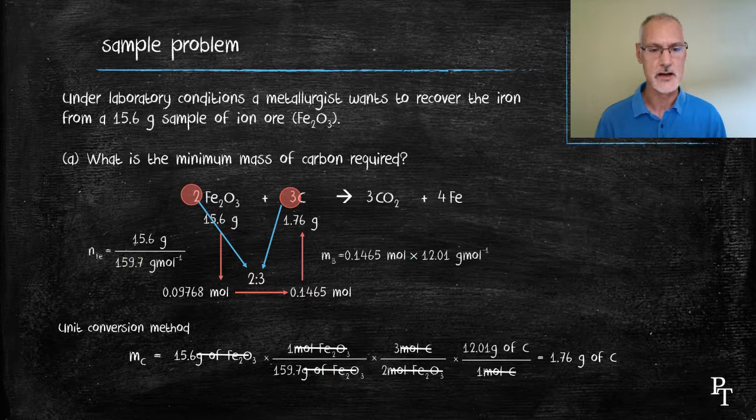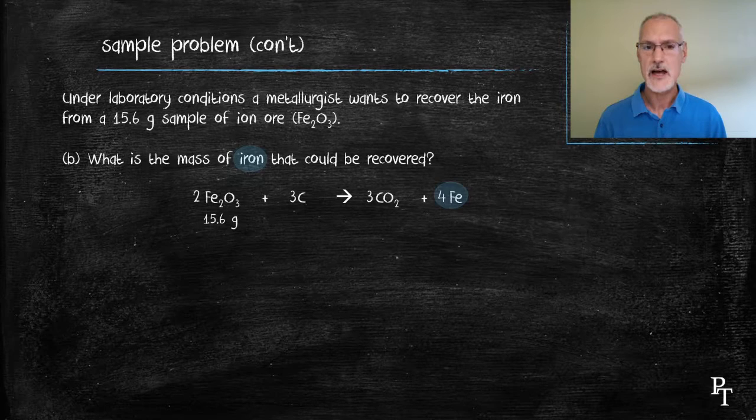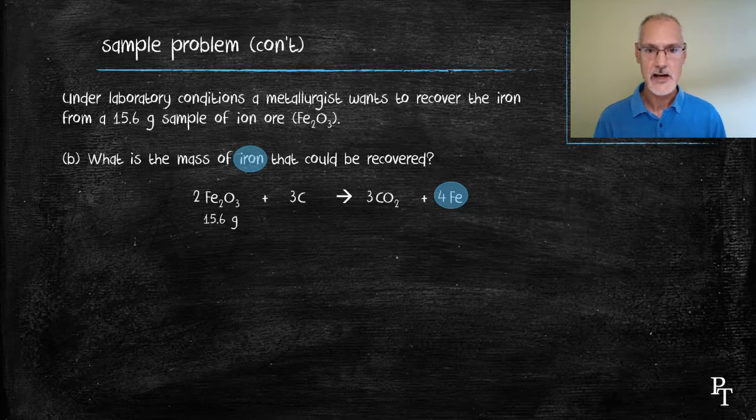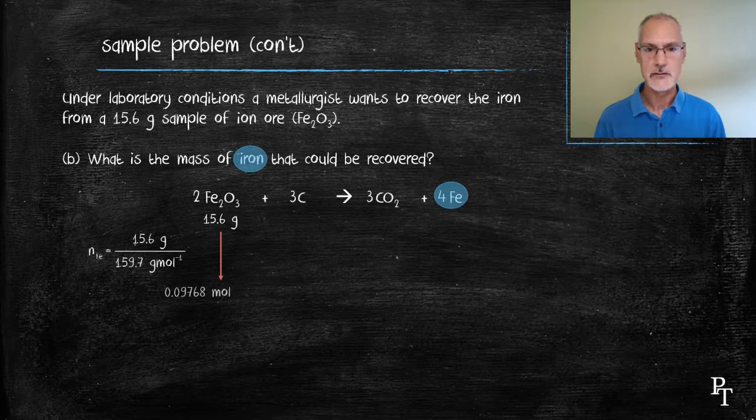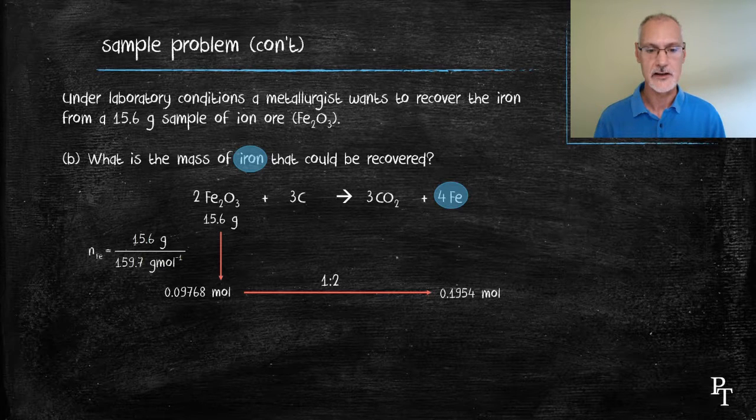I want to continue this question now and look at another point of it. In this case, I would like to determine the mass of iron that would be produced with my same starting amount. So all that's going to change here is how I work around the equation. My first step is exactly the same, converting the information to moles of iron oxide. But now I want to go from iron oxide to iron, and the ratio there is 2 to 4. I can simplify that to a 1 to 2 ratio. So I need to double the moles that I have of iron oxide.